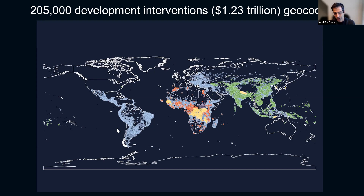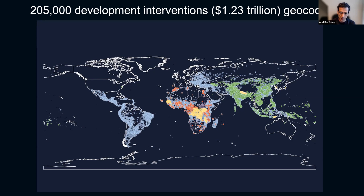Some of this effort took a donor-specific view. The blue dots on the screen are the World Bank portfolio — we've now geo-referenced all bank projects approved between 1995 and 2014. Some of this work also took country-specific views. For example, in the DRC, we looked at all the different donors and geo-referenced all of those activities for a distinct time window using the aid information management system kept by each of those countries.